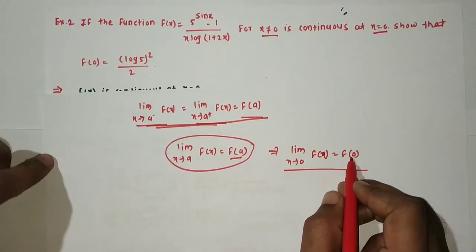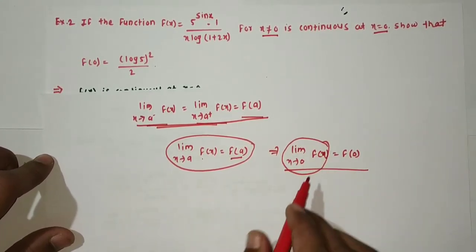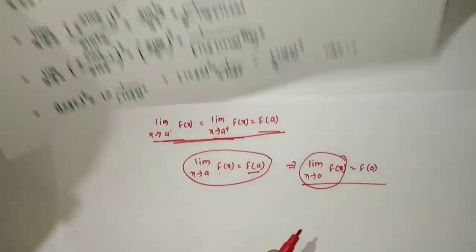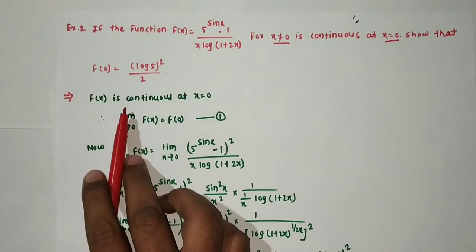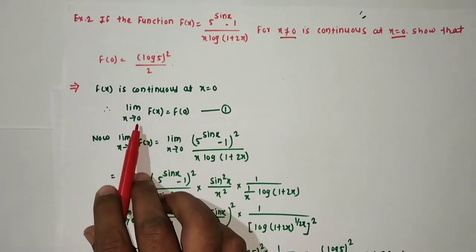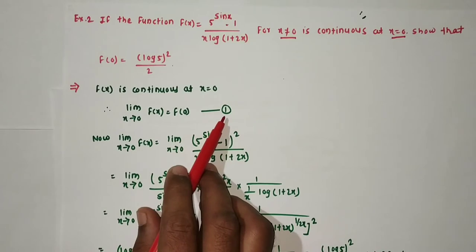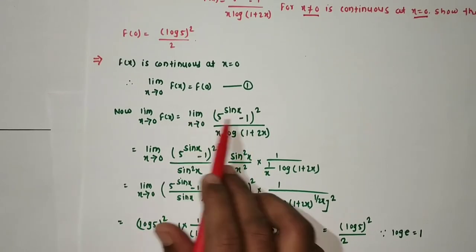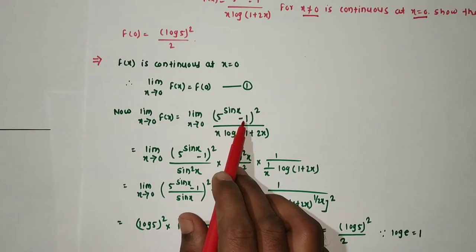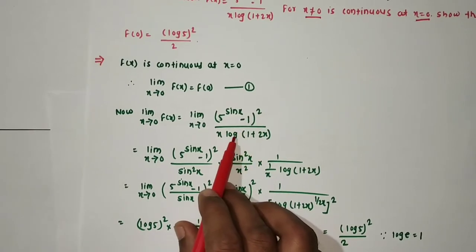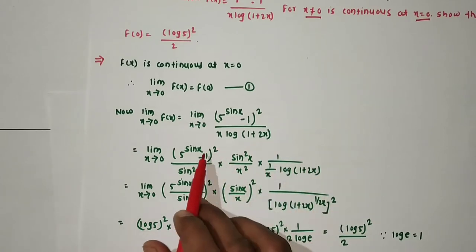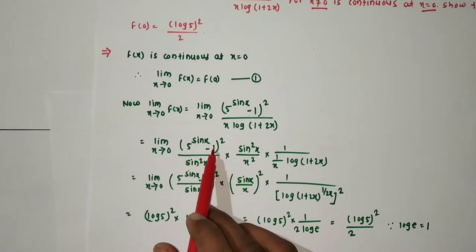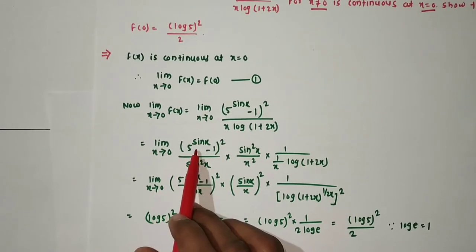Since f(x) is continuous at x = 0, limit as x tends to 0 of f(x) = f(0) — call this equation 1. Now limit as x tends to 0 of f(x) equals limit as x tends to 0 of (5^sinx - 1)² / [x · log(1 + 2x)]. We need to make some adjustments to apply standard limit formulas.